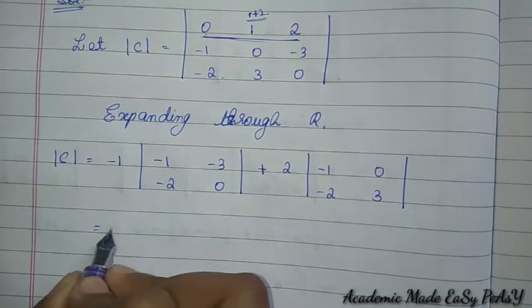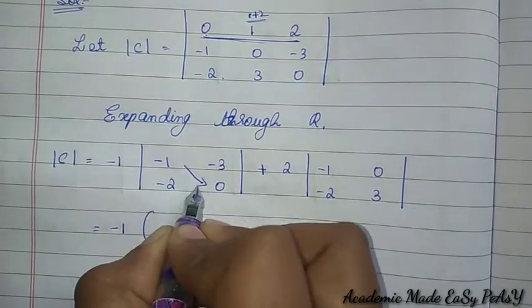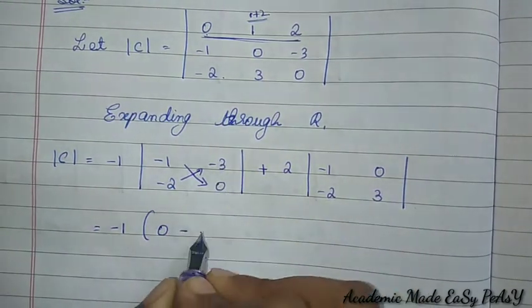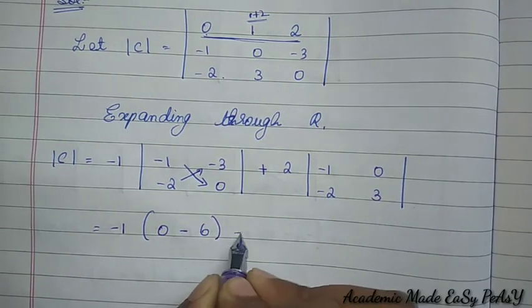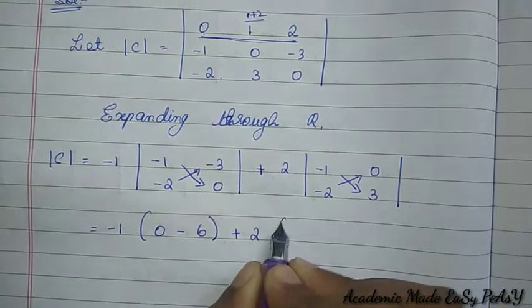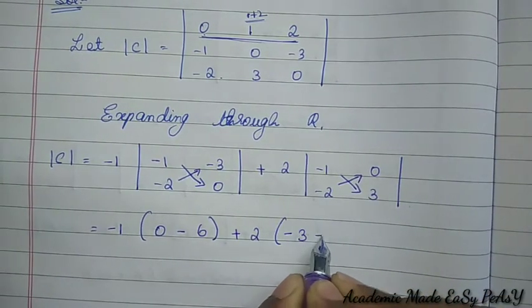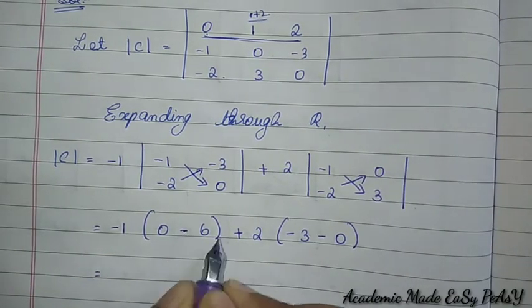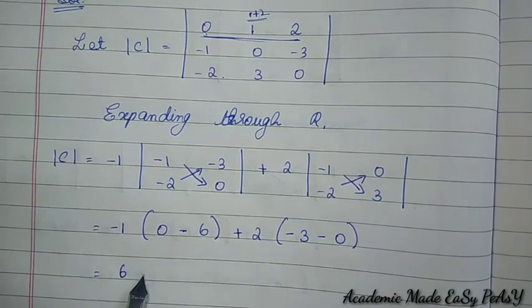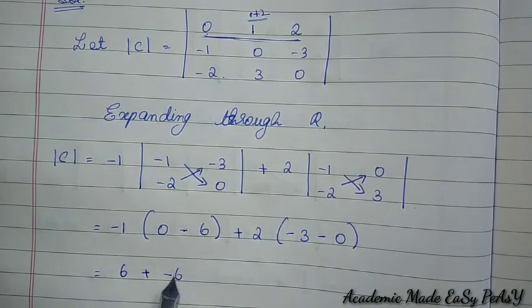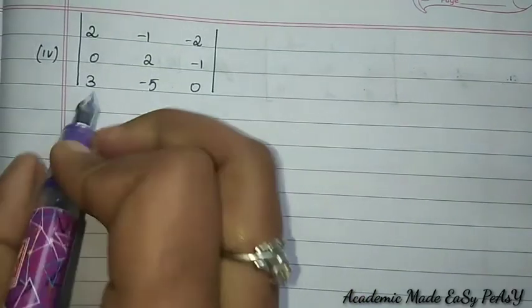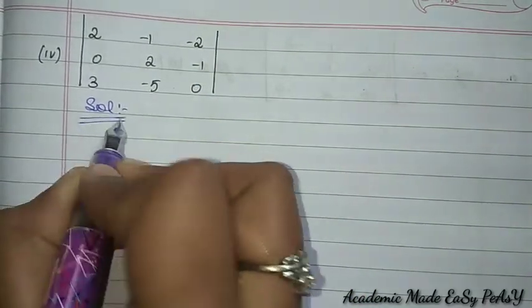Simplifying: 1 × (0 − (−2)×3) + 2 × (−1×(−3) − 0) ... after full expansion: −1×(−6) + 2×(−3) = 6 − 6 = 0. So det(C) = 0.